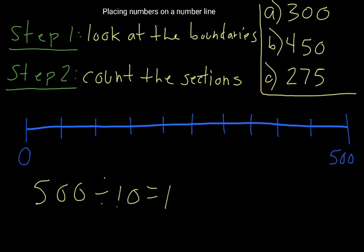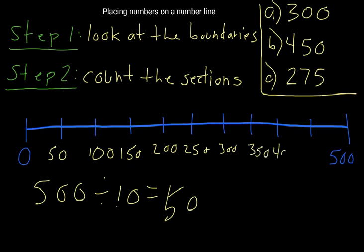That means each section is worth 50. So that means we have 50 here, 100 here, 150 here, 200, 250, 300, 350, 400, 450, and then 500.